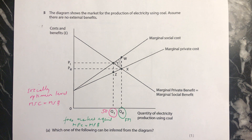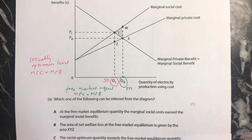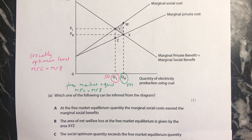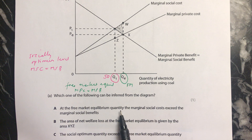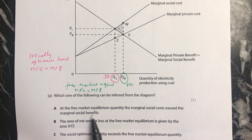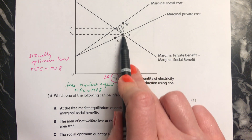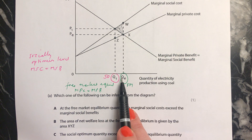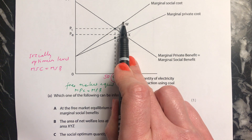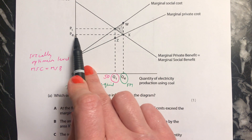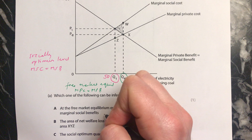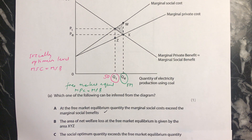Now that we know all of those things, we can see what the right answer is. A says: at the free market equilibrium quantity, the marginal social costs exceed the marginal social benefits. That is true — that's why we have the net welfare loss. At this level of output, the marginal social cost is up here, and the marginal social benefit is at PE. So it looks like this is right, but we need to check the other answers.